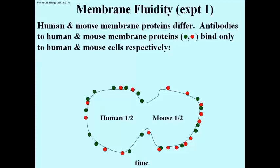The technique here is fluorescence microscopy, based on making antibodies to mouse cell surface proteins and human cell surface proteins, and then tagging each of them with a different fluorescent dye that will fluoresce a different color, represented here by red and green. What you see is live cells fusing, and then over time the fluorescences mix, because the membrane proteins bound to those antibodies are moving laterally in the membrane, eventually diffusing throughout the entire membrane of this fused pair of cells.